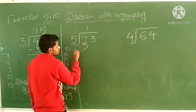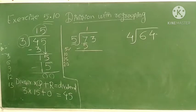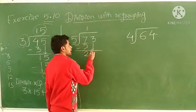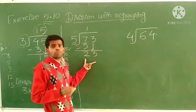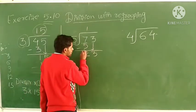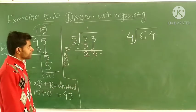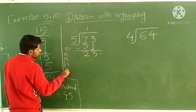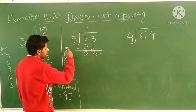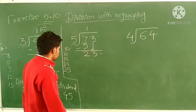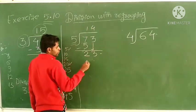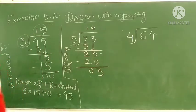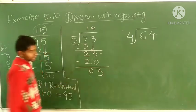We take 5 ones are 5. Subtract 5 from 7 and we get remainder 2. The next digit, 3, comes down to join 2, making 23. Now divide 23 by 5. In the table of 5: 5 fives are 25, which is greater than 23, so we take 5 fours are 20. Subtract: 23 minus 20 gives remainder 3. The quotient is 14 and the remainder is 3.